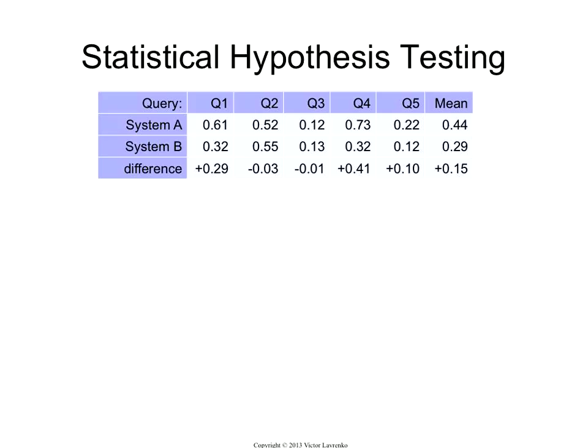These are the mean average precision numbers that each system produces on each of the queries. And you see that sometimes system A is better, sometimes system B is better, and it happens to be that overall, on average, system A is better by a sizable amount. But you want to know, is that due to chance or not?